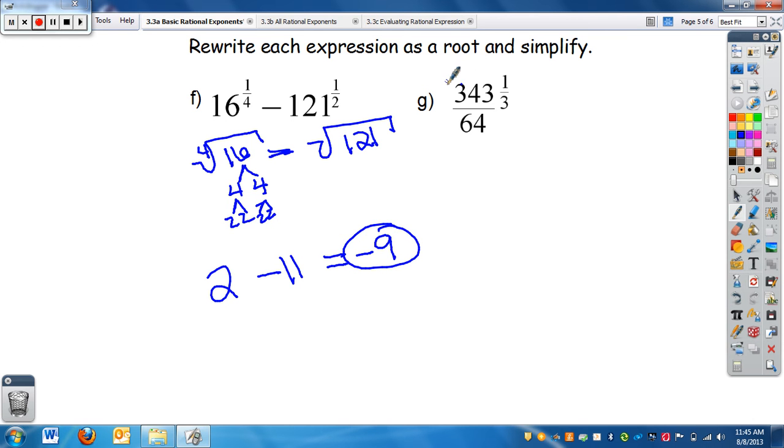And then this one: 343 over 64 to the one-third power. So that is the cube root of 343 over 64. We can remember, split it up, we're allowed to do that, and we're going to see what we can pull outside that simplifies nicely.